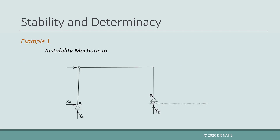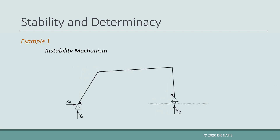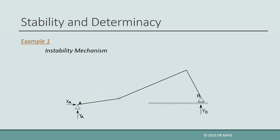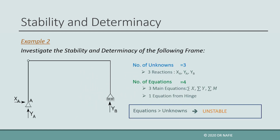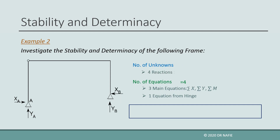The instability of the frame can be visualized easily if we apply a horizontal force at the top left corner. As a follow-up, if we exchange the roller support at the right end by a hinged support, the number of reactions will be increased. The total reactions will be 4 instead of 3. Therefore, the number of equilibrium equations will now be equal to the number of unknowns, and the frame will become stable and determinate.